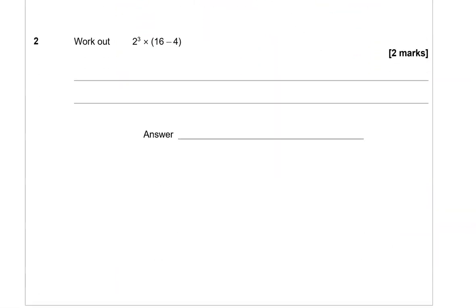Work out 2³ × (16 - 4). So we've got to apply BIDMAS here. Have we got brackets? Yes we do. So we're going to focus on the brackets first. 16 take away 4 gives us 12.